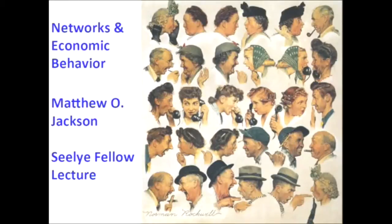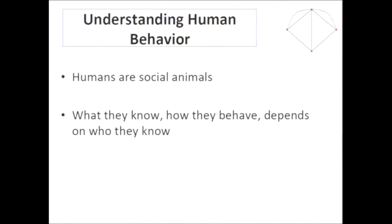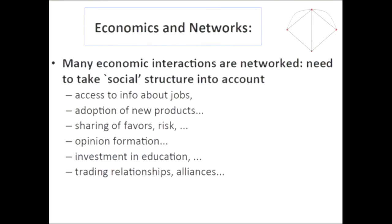The work I'm going to talk about this evening will give you an idea of some of the things we learn from looking at networks in economics. Understanding human behavior really has to be put in a social context because we're really social animals. We depend on each other for all kinds of things — our information, the favors we get from other individuals — all of these are put in a social context. Looking at social structure now gives us much more understanding of very particular kinds of economic activities.